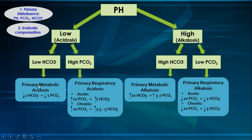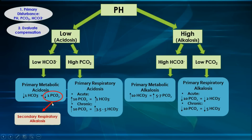With primary metabolic acidosis, there will be a drop in bicarbonate. For every one unit drop in bicarbonate, we expect one unit drop in pCO2, because the lungs compensate by exhaling carbon dioxide through hyperventilation. If this expected ratio of compensation is present, the drop in pCO2 is known as secondary respiratory alkalosis, occurring as compensation to balance out the pH.